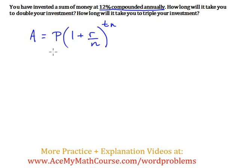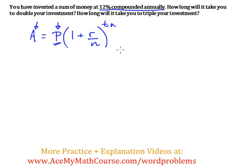We're using this formula because this is compound interest, not simple interest. P is the original amount that you invest. A is the final amount. N is the number of times that it compounds per year. In this case, because we're compounding annually, N is 1. If this was compounded monthly, N would be 12. Daily, 365, and so on.